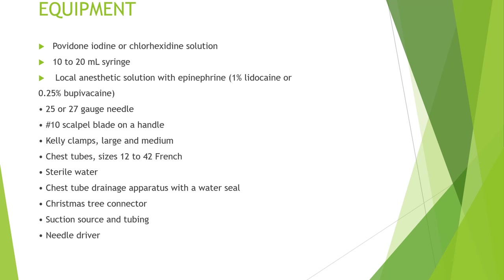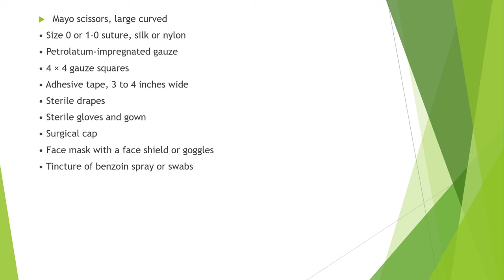Equipment for thoracostomy includes: povidone-iodine, normal saline solution, 10 to 20 ml syringe, local anesthetic solution with epinephrine (0.25% bupivacaine), 25 or 27 gauge needle, number 10 scalpel blade, Kelly clamps, chest tubes (size 12 to 42 French), sterile water, chest tube drainage apparatus with water seal, Christmas tree connector, suction source, needle driver, large curved scissors, suture material, petrolatum 4x4 gauze squares, adhesive tape, sterile drapes, sterile gloves and gown, surgical cap, and face mask with goggles and face shield.